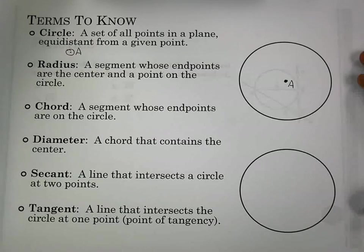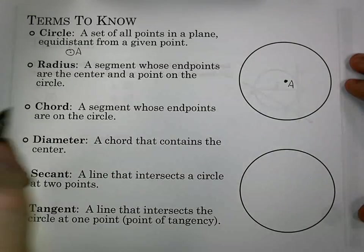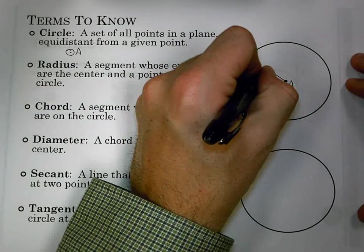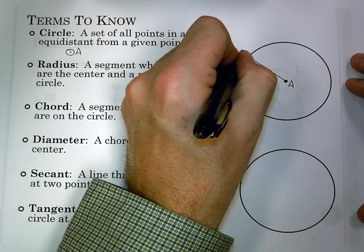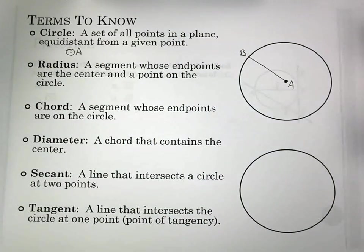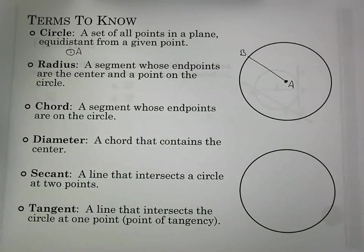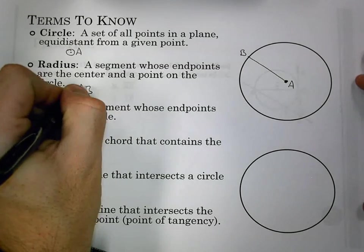A radius is a segment whose endpoints are the center and a point on the circle. So I can draw a segment here, call it AB, that starts at the center, ends on the circle, it's a segment, and there'll be a radius AB.